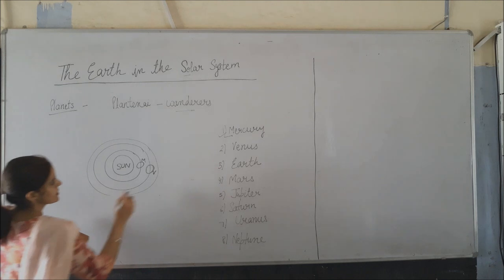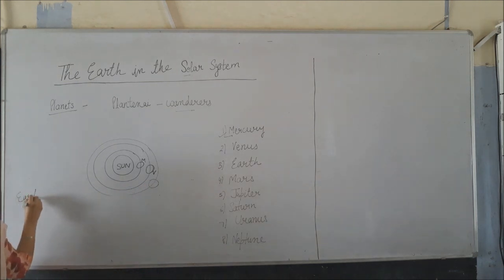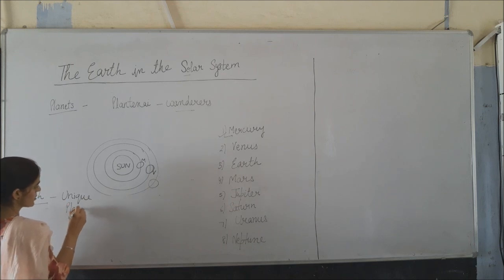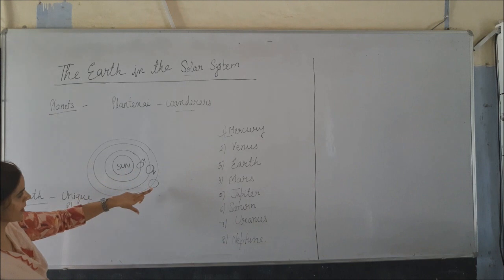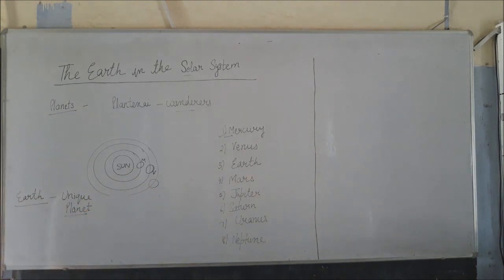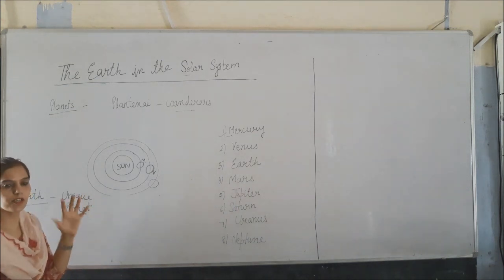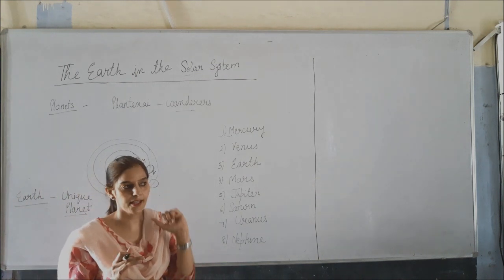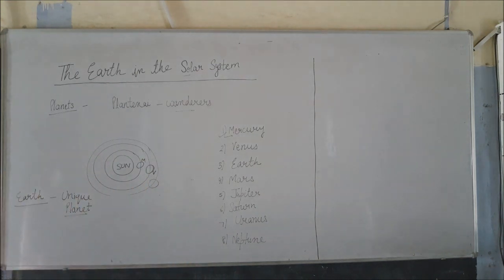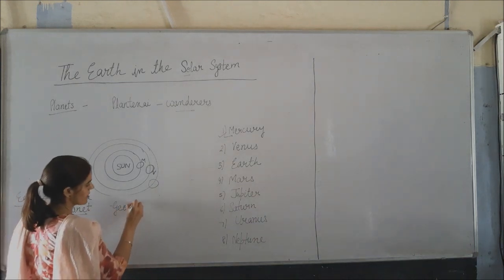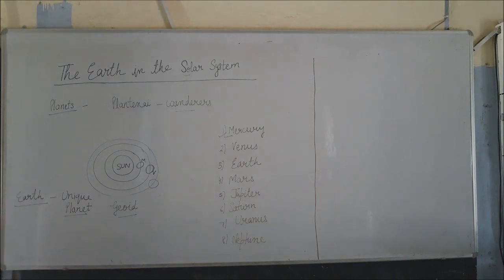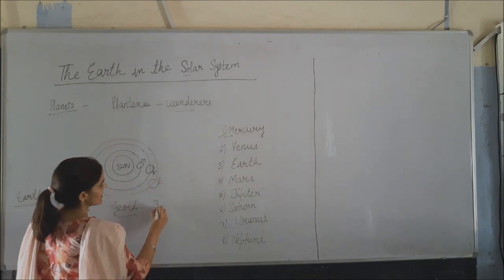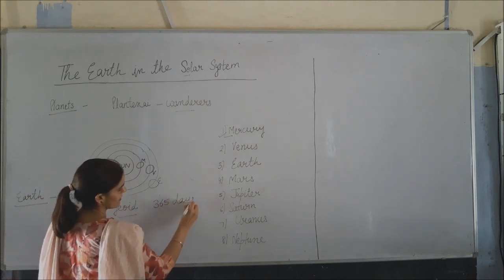Then comes the Earth, our unique planet. Earth is the third planet from the sun. The shape of the Earth is not perfectly round or spherical — it is slightly flattened at the poles and bulges in the middle, like an orange. This shape is described as geoid, meaning an Earth-like shape. Earth takes 365 days — one year — to complete one revolution around the sun.